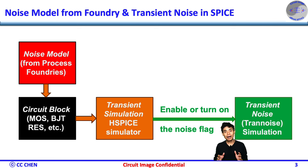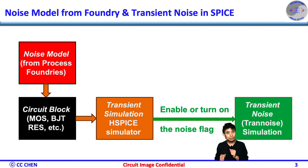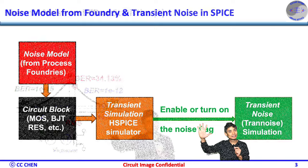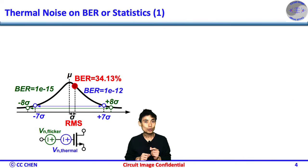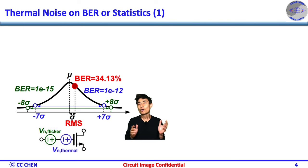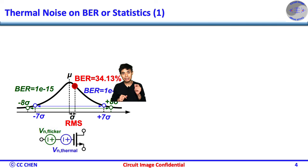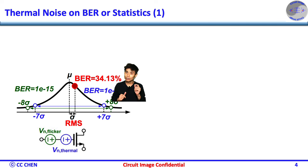After understanding how the transient noise can be set up and performed, how do we apply the transient noise simulation to get the sampler's input-referred noise? Think about the BER over statistical images for 5 seconds. In the one-noise video, we describe the BER related to the sigma value in a quick way of evaluating the 3-sigma link budget. We still can apply the fundamental statistical method here. Since we are working on the RMS over one-sigma noise value, the BER is mapped to 34.13%. Then, we can simulate the BER of the sampler at the output decision to define the corresponding input-referred noise.